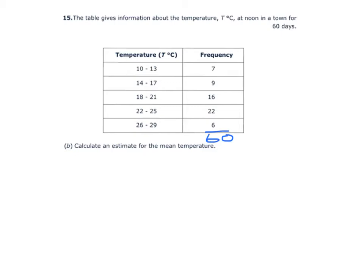So the first midpoint is 11.5. The second midpoint is 15.5, then 19.5, 23.5, and 27.5.